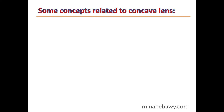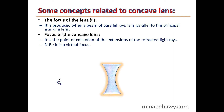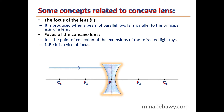Some concepts related to the concave lens: The focus of the concave lens is the point of collection of the extensions of the refracted light rays. Because the lens diverges the light, the extensions of the refracted rays will be collected in a virtual focus. This focus is virtual because it results from the collection of the extensions of the refracted light rays, not the actual rays.